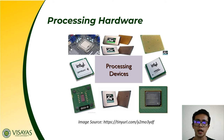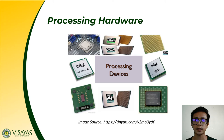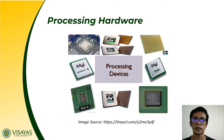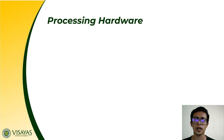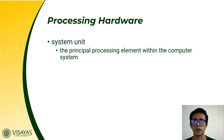Now let's proceed with processing hardware. The major role of processing hardware is to retrieve, interpret, and execute software instructions. The major parts of processing hardware are your system unit and your central processing unit (CPU). The system unit is the principal processing element of a computer system — it houses all other elements of the processing hardware.